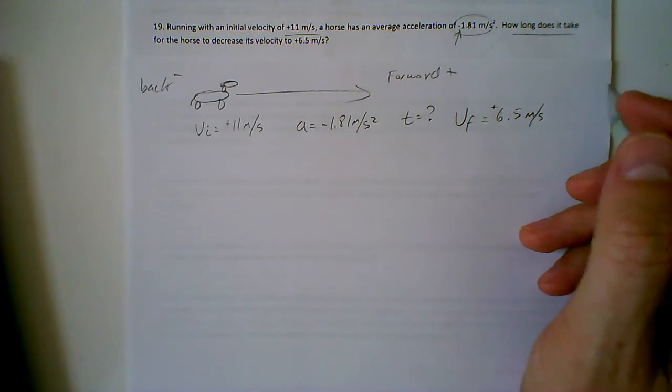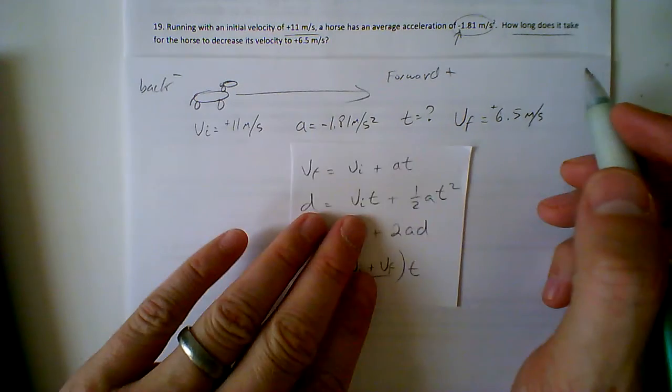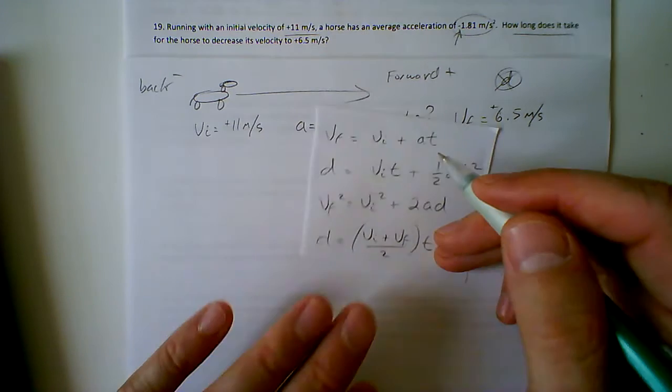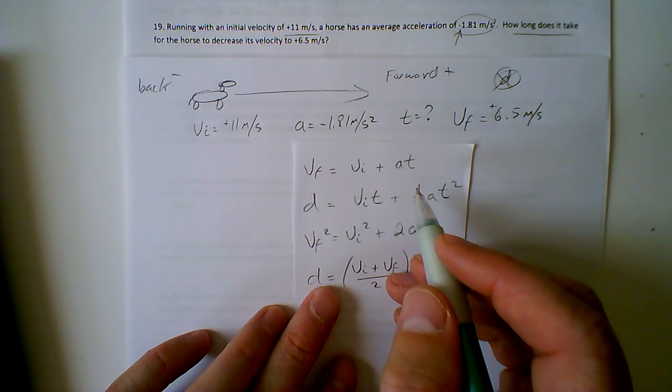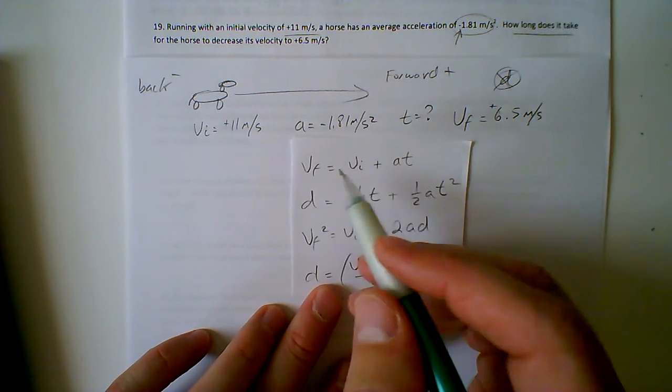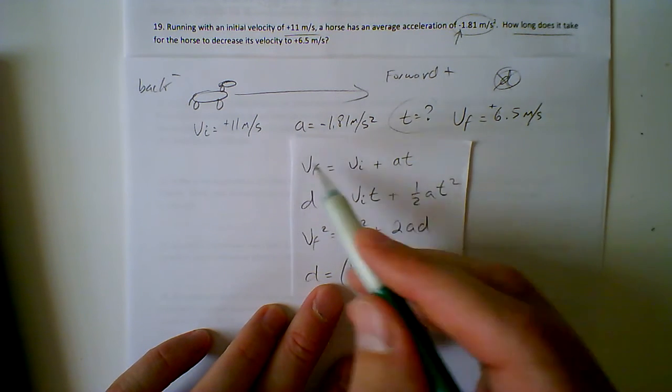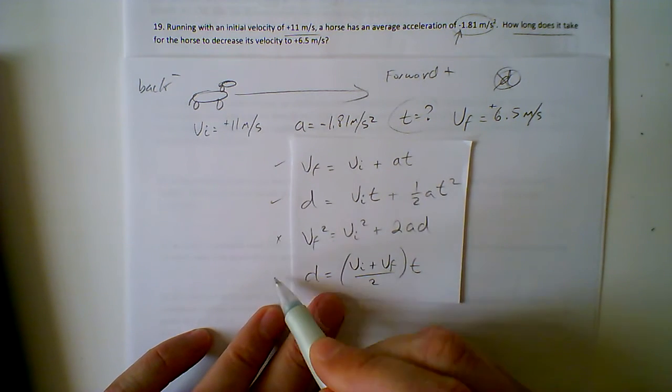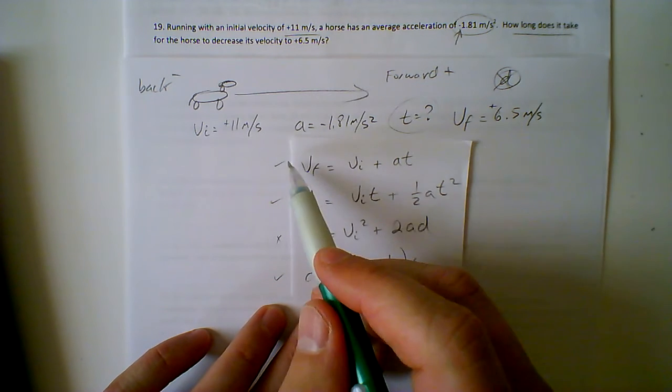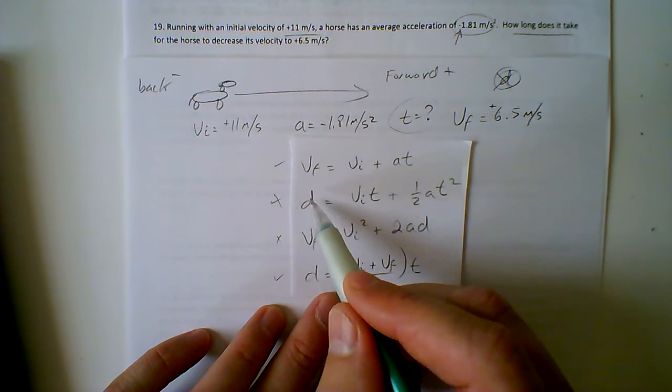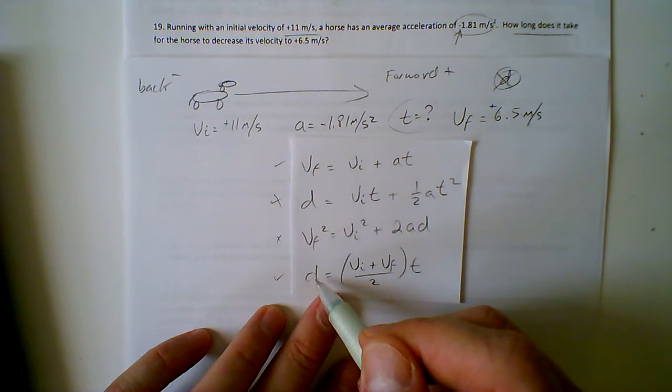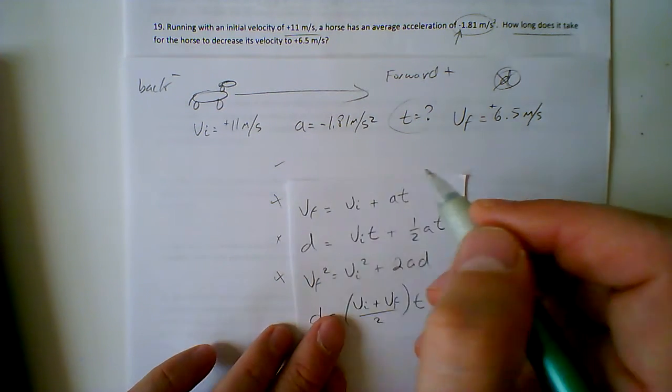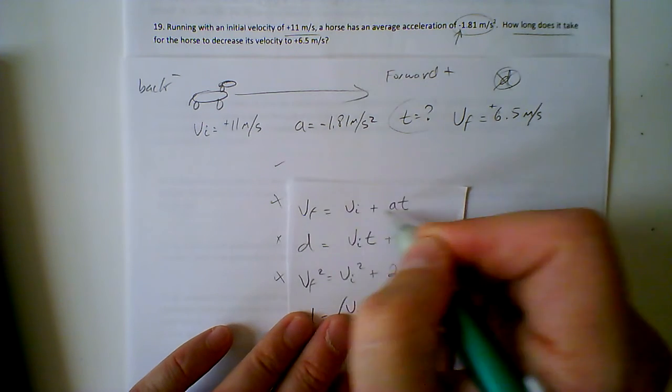Now we're ready to go ahead and look at our equations. Once again in this problem, we are not concerned with d, we don't have it. Same process of elimination. We have to find t, that's the most important thing. This has t, this has t, this does not have t, this has t. And then we don't want d. This doesn't have d, this does have d, we can't use it because that's what we don't want. This one does have d and we don't want it, so that gets cancelled out. We're not going to use that one. We're left off with the top one: Vf equals vi plus at.